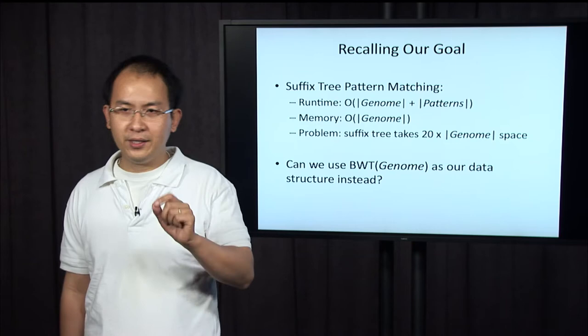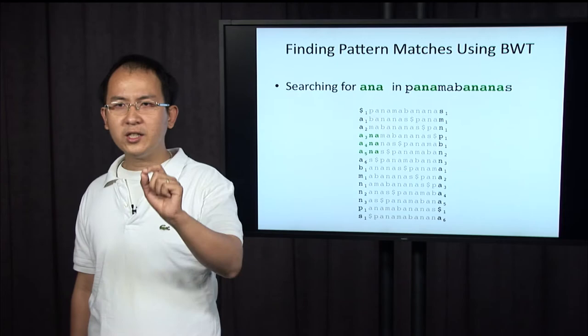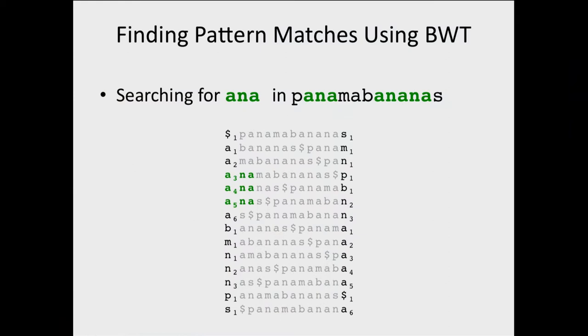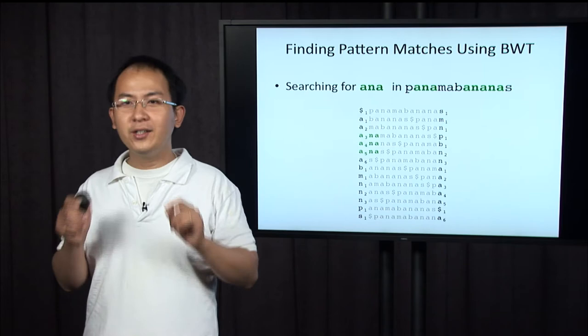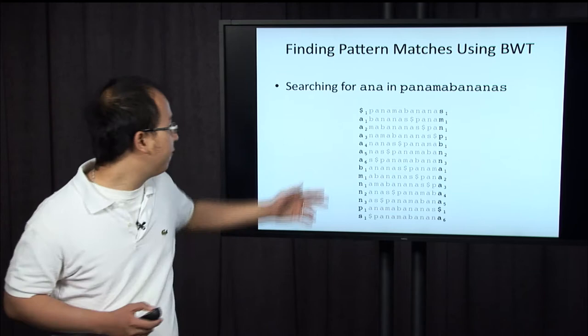Let's take an example. Let's search for ANA in the text — Panama, banana. And as you remember, this is a matrix where the rows are all possible cyclic rotations of the string. Because of that, all the matches will appear in columns like this. But of course, we don't have enough memory to store all of this matrix, so we just store the last column as the BWT.